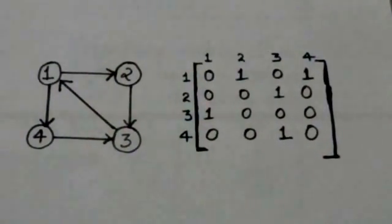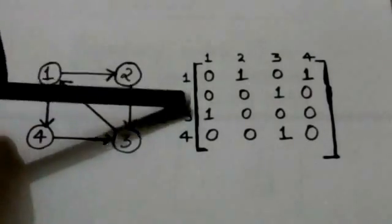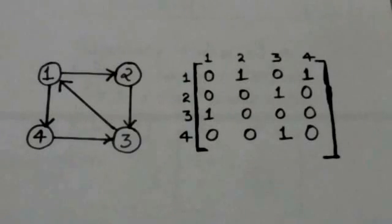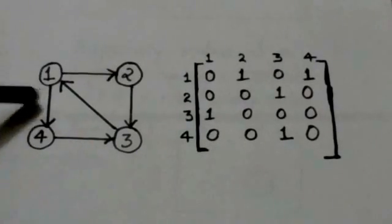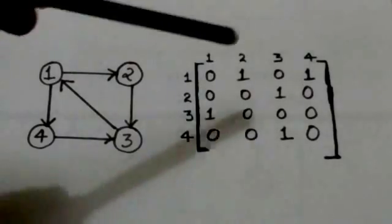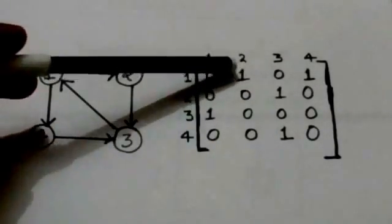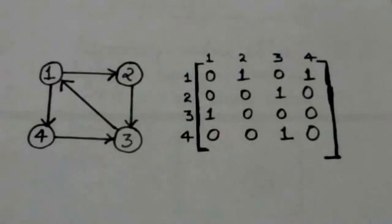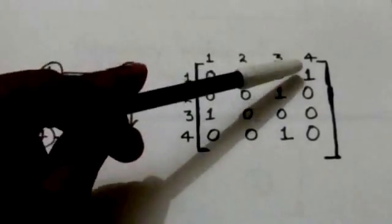For example, see this digraph. This is the adjacency matrix of this digraph. The order of this matrix is 4 cross 4 because there are four vertices in the digraph. In the digraph there is an arc from vertex 1 to vertex 2. Therefore in the adjacency matrix the entry at the first row and second column is 1. Similarly, there is an arc from vertex 1 to vertex 4. Therefore in the adjacency matrix the entry at the first row and fourth column is 1.